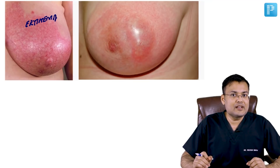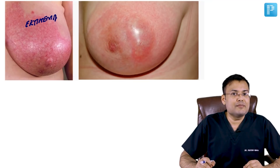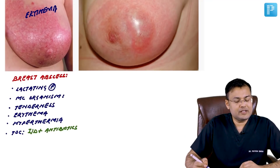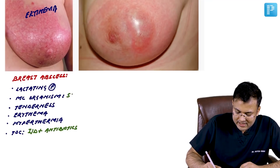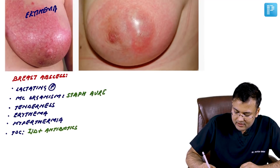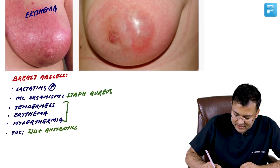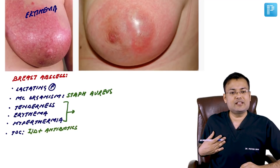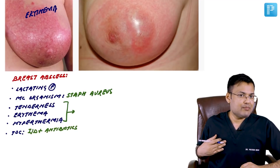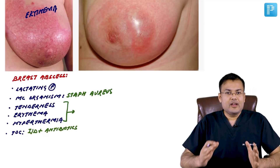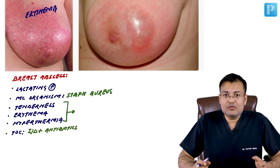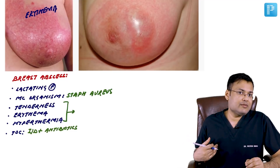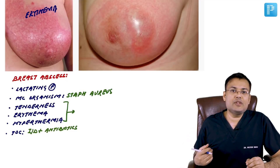An important finding in inflammatory breast cancer is that at least 33 percent of the breast skin must be involved by inflammatory changes. Breast abscess is more common in lactating females, especially primigravidas, caused by Staph aureus. On examination: tenderness, erythema, raised temperature. Treatment of choice is incision and drainage with antibiotics.